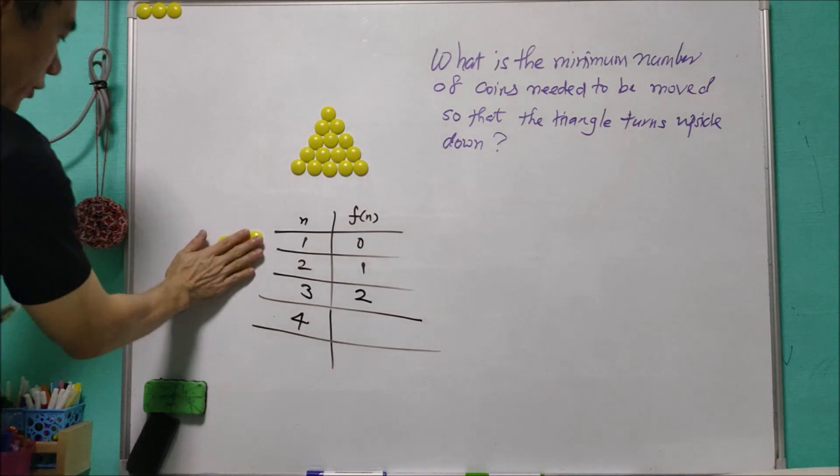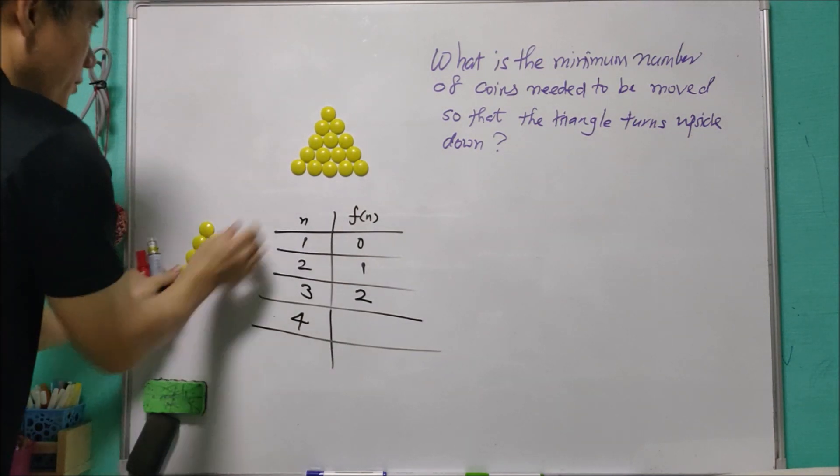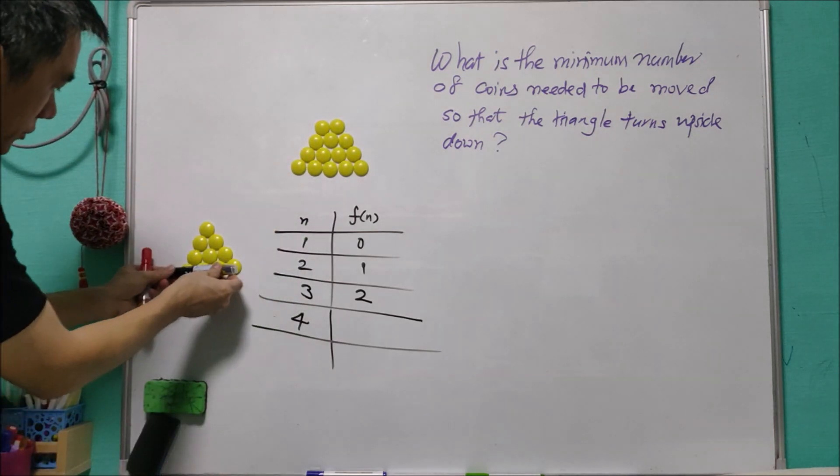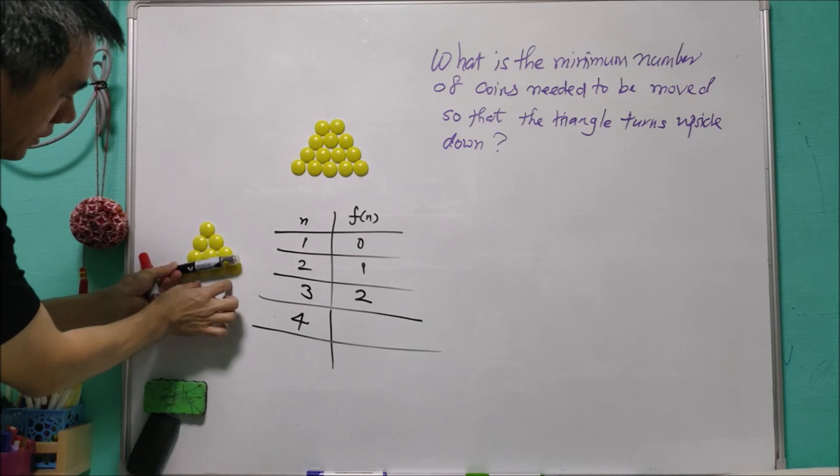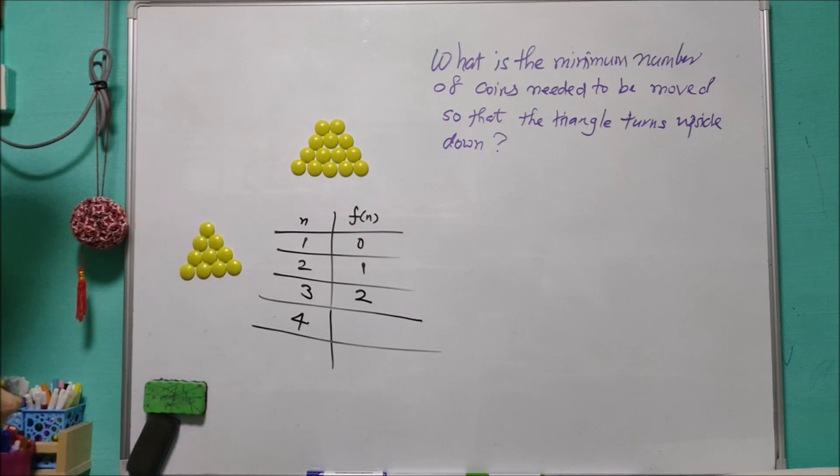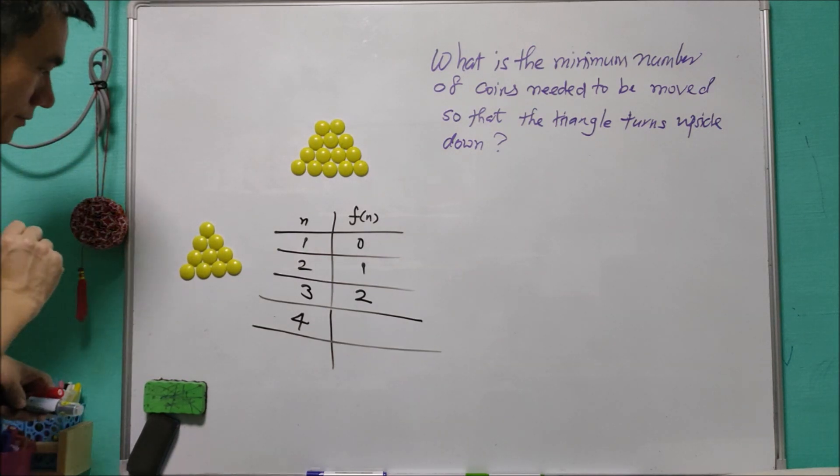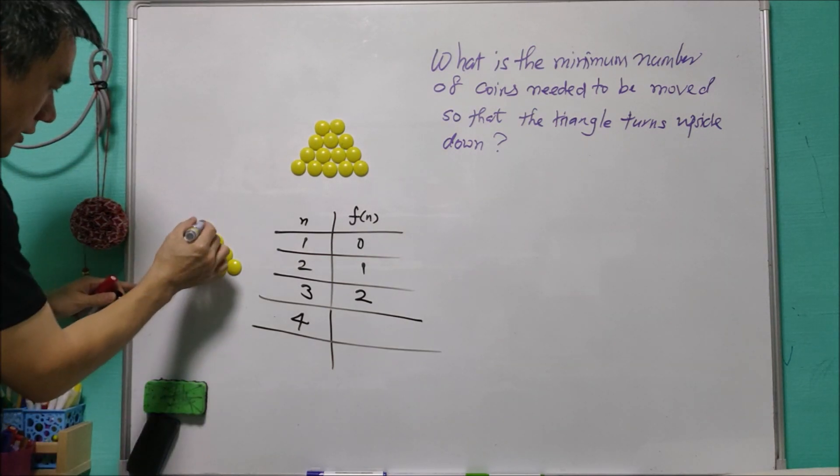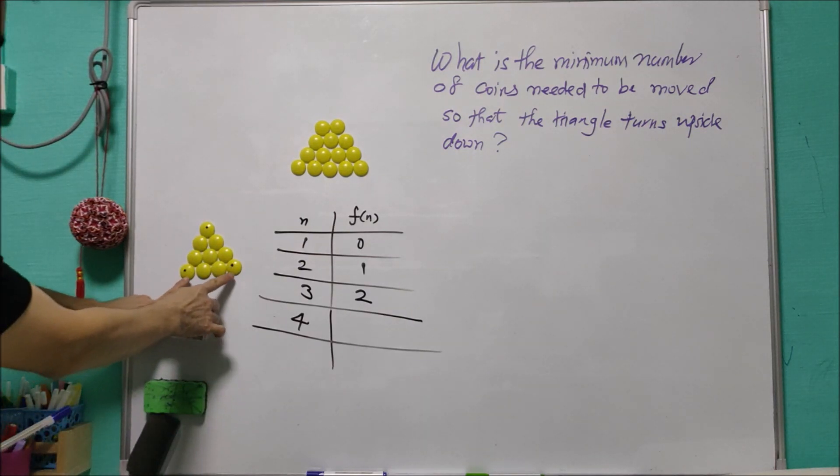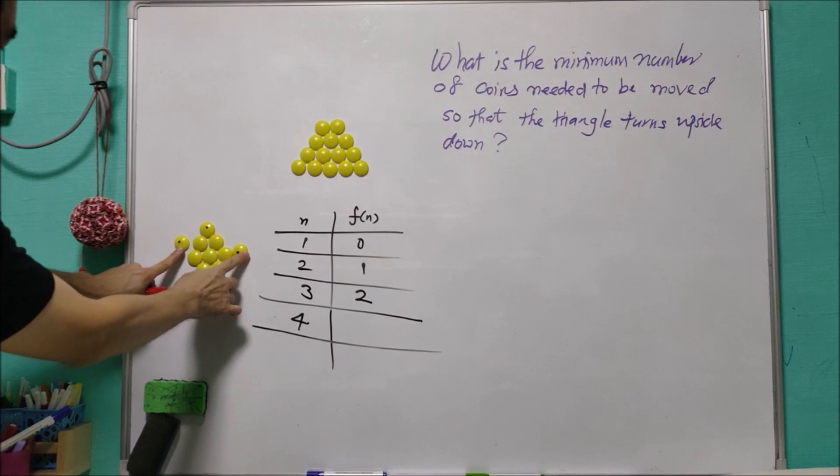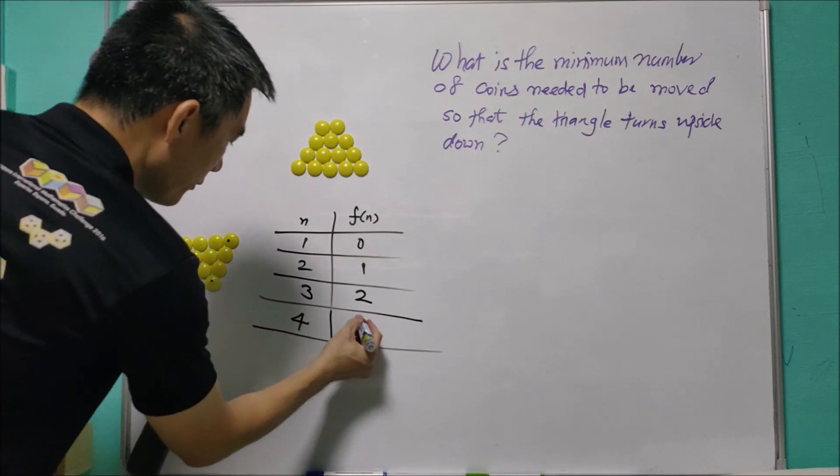When n equals 4, if this row is fixed, then we have to move everything from here. We need to move six of them, but we can save a little bit by only moving three coins. That is, moving these three. Move these two to the upper row and the last one to here, so we have three.